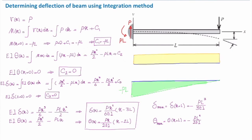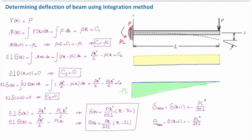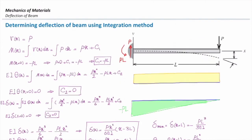This problem was not very difficult, but for structures with more complicated loading, more complicated restraints, or several elements connected together, it is nearly impossible to solve beam deformation using this direct integration method. In those cases, we use the principle of superposition and split the structure into simpler parts.